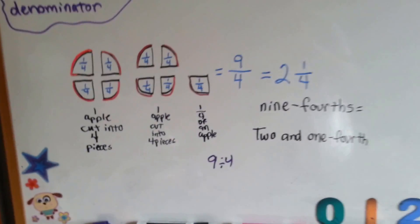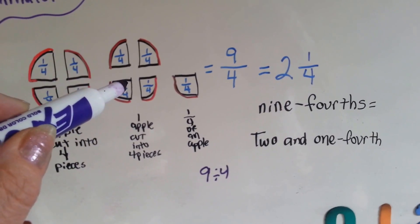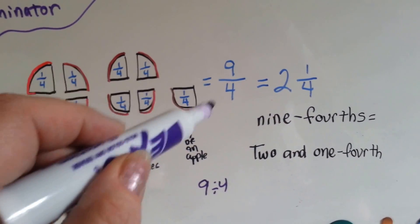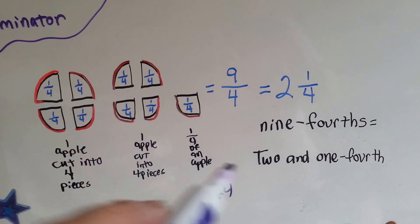Let's take a look at this one. This apple was cut into four pieces. This apple was cut into four pieces. And here's a little fourth of an apple. Maybe somebody ate the other three. So, there's a whole one, another whole one. That's two and a fourth. Two and one fourth.